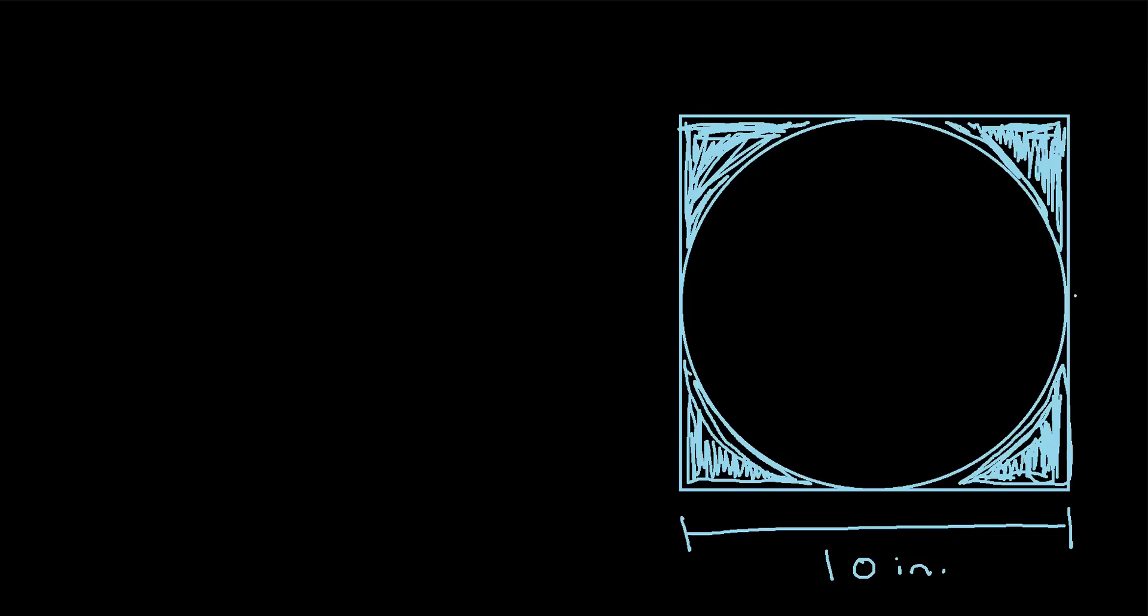Let's say we have this circle inscribed inside of a square, and we want to find the area of the shaded region. And all we're told is that this side length right here of the square is 10 inches. How can we find the area of the shaded region?